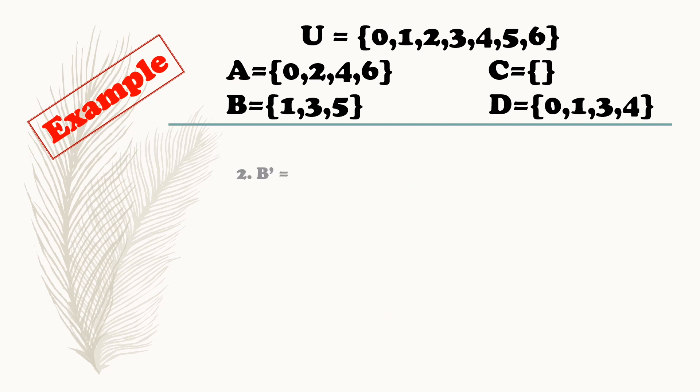Next is the complement of set B. Look at the elements of set B: 1, 3, 5. Ano yung elements na wala kay set B na nasa universal set? 0, 2, 4, 6. Therefore, the complement of set B is equal to {0, 2, 4, 6}.